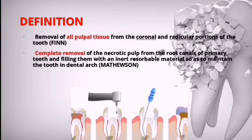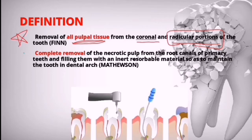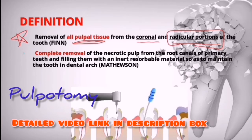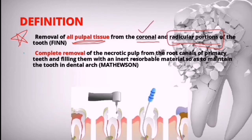The removal is from the coronal as well as the radicular portions of the tooth. You have to remember that the radicular portion of the pulp is also removed — this is what mainly distinguishes it from pulpotomy. In pulpotomy, we remove only the coronal portion of the pulp.